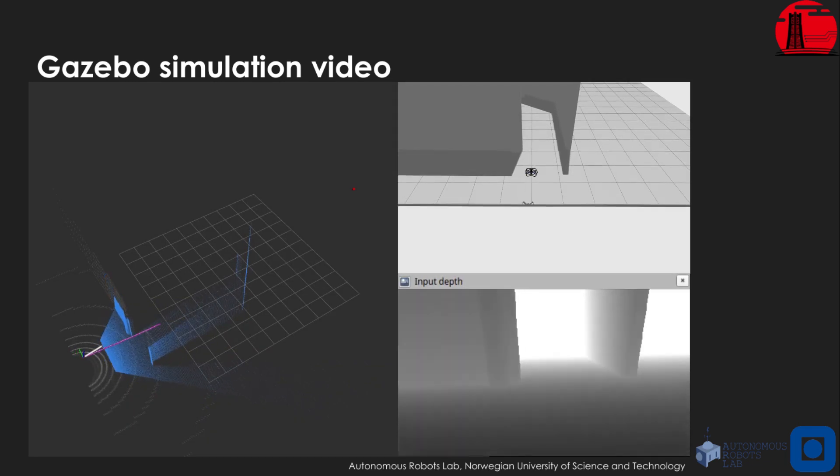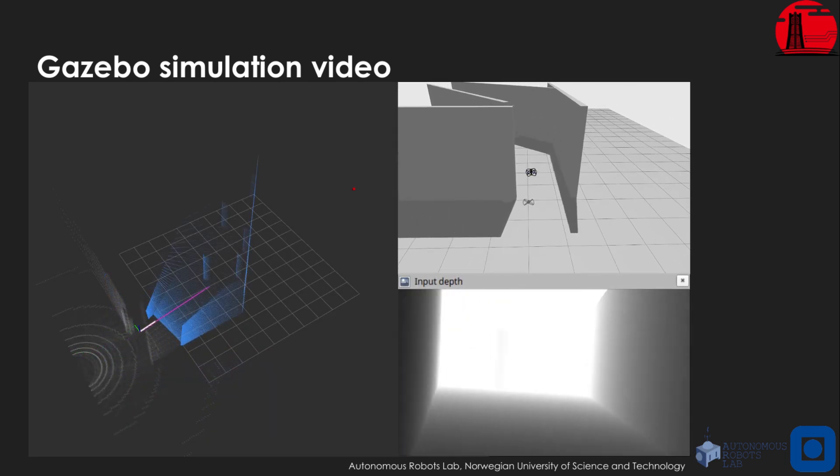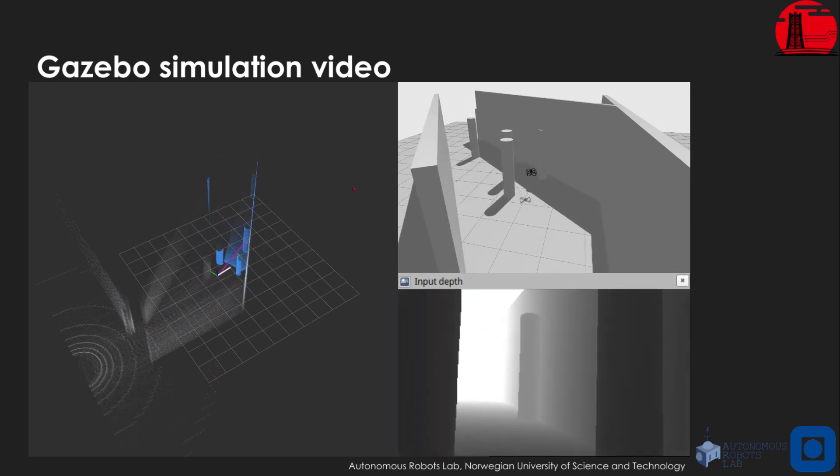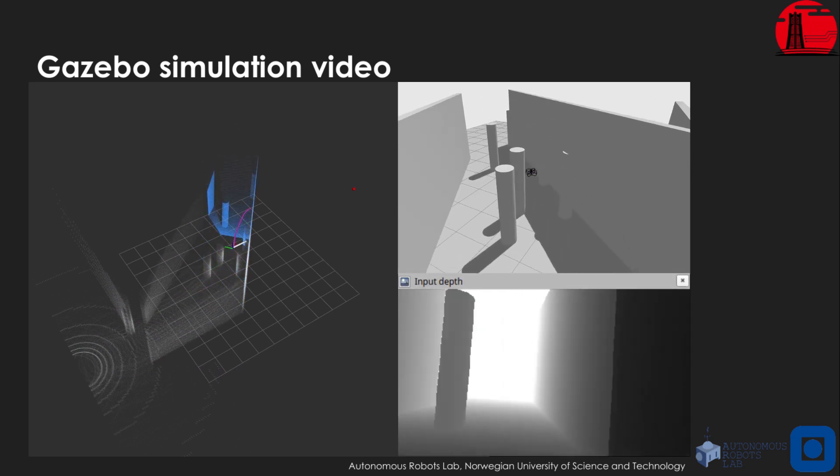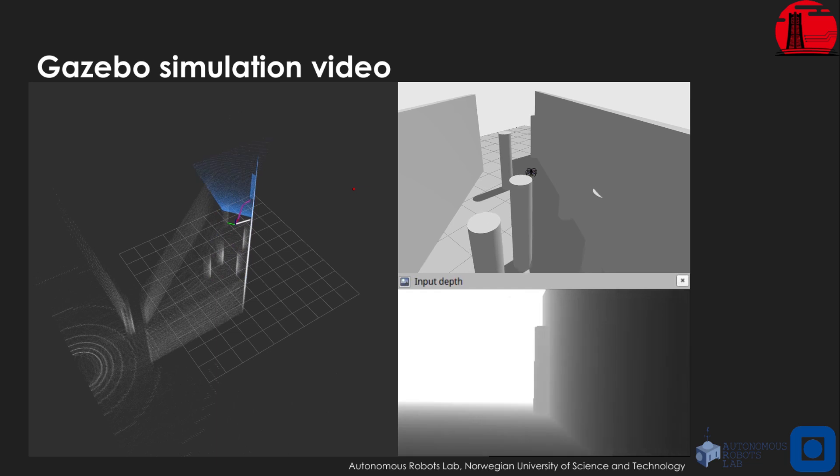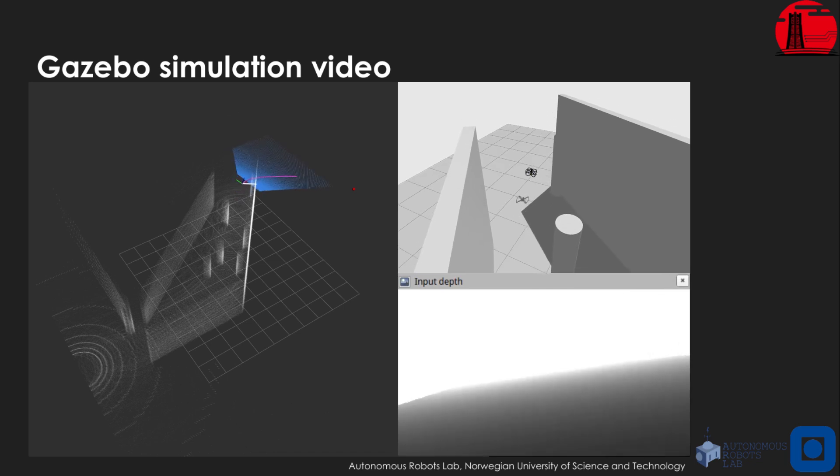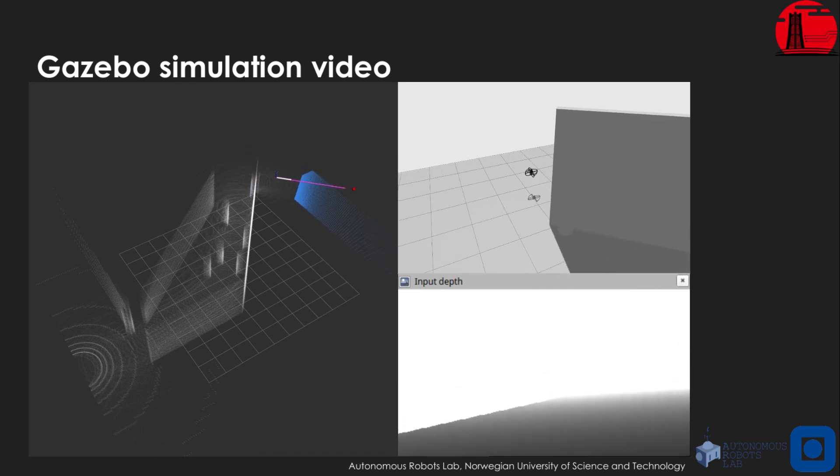We now present some simulations in Gazebo of our framework. The drone navigates an unknown corridor filled with pillars, relying only on onboard sensing as you can see in the bottom right. The drone is tasked to reach a waypoint located 20 meters in front of its starting location with a navigation speed of 2.5 meters per second.